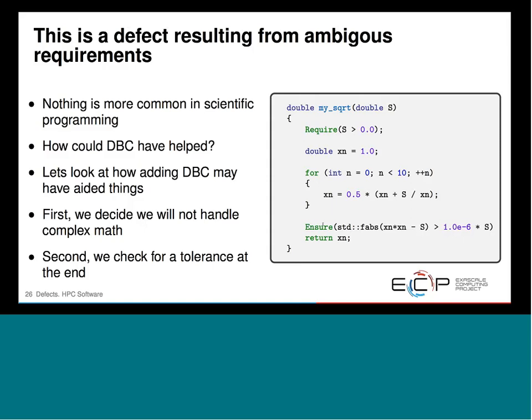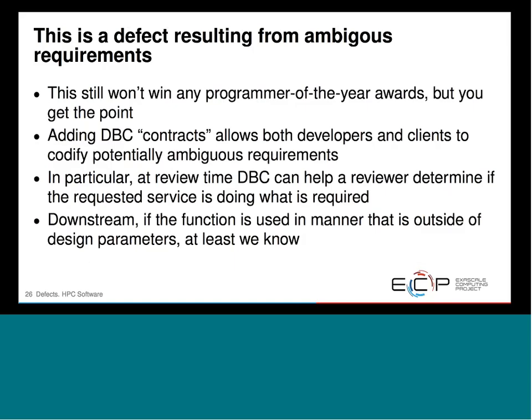If I'm a reviewer — and maybe I'm going to be one of the ones using this down the road — I would immediately see that the implementer decided this was not going to handle complex math, because it's right front and center. I could then say, wait a minute — this needs to be able to handle complex math. Very early in the process, I'm able to detect the problem before it gets into production and before people start using it months down the road.